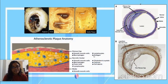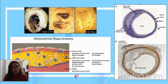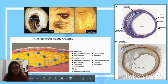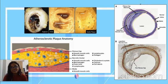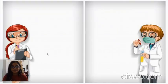The fibrous cap is composed of smooth muscle cells and extracellular matrix, while just below that there is a cellular area having smooth muscle cells and macrophages. There is also a central lipid core consisting of foam cells, cholesterol crystals, and extracellular lipid.